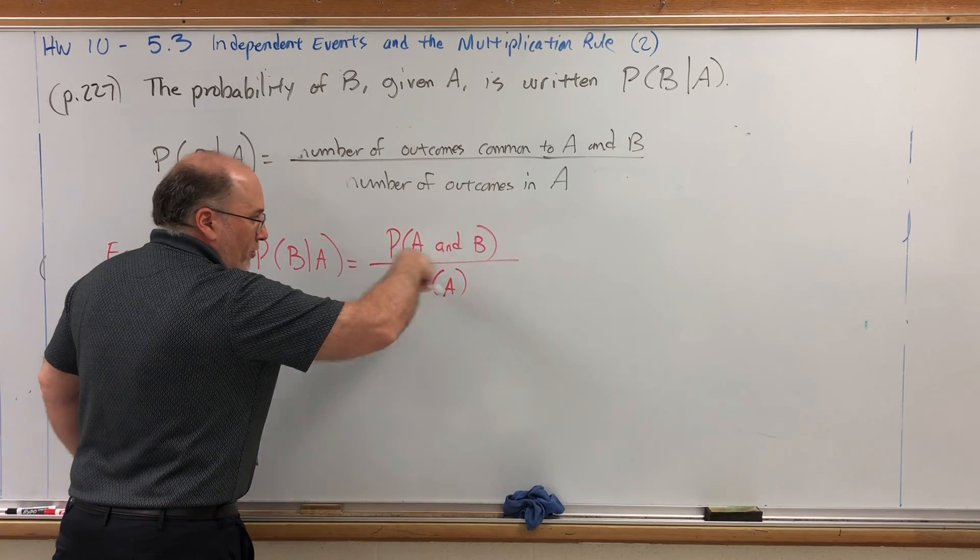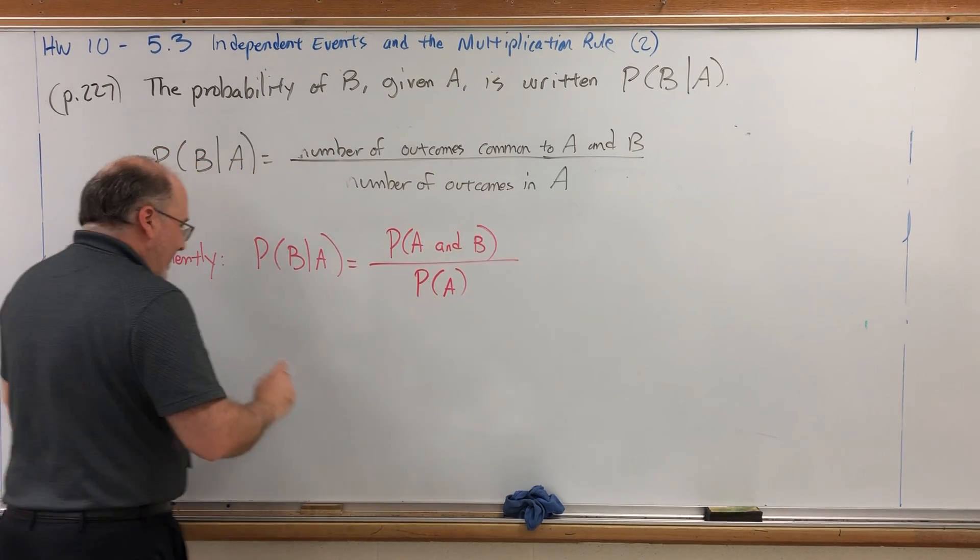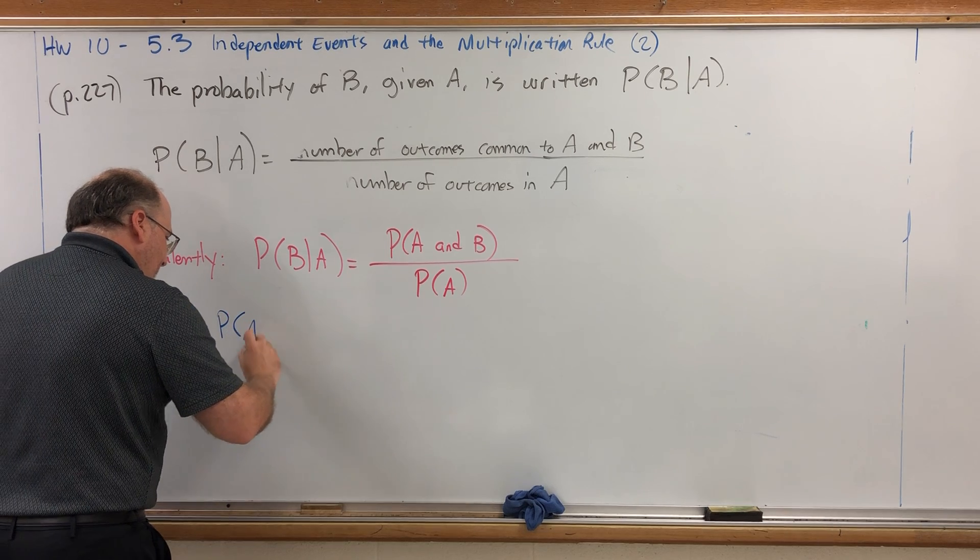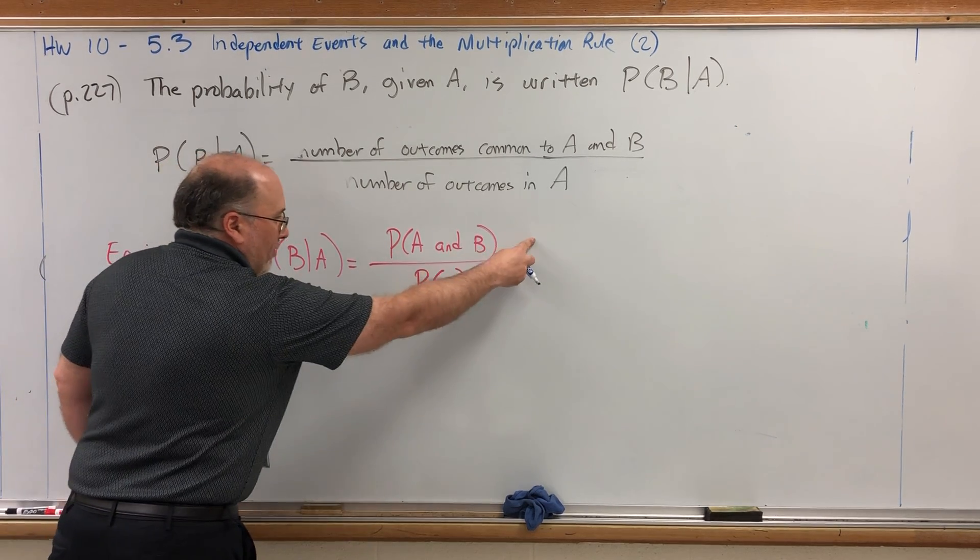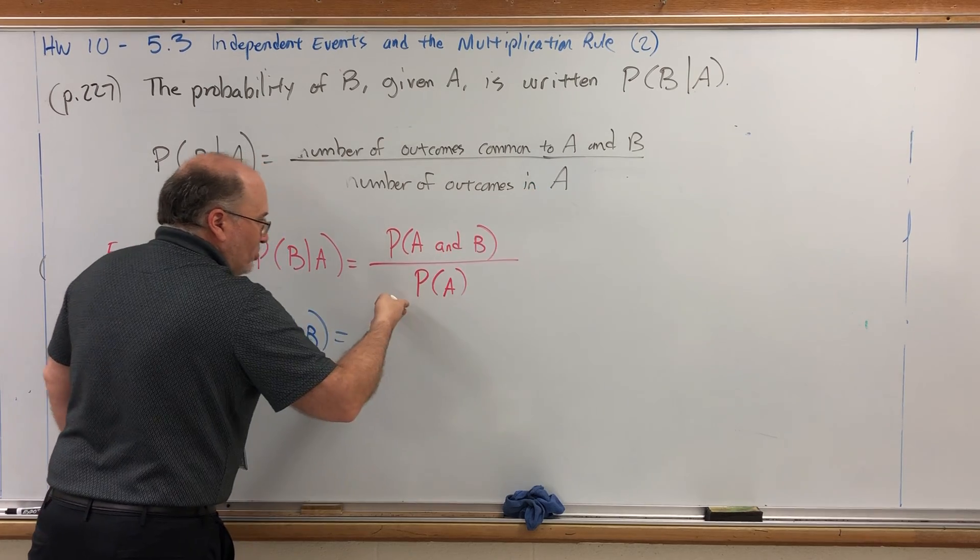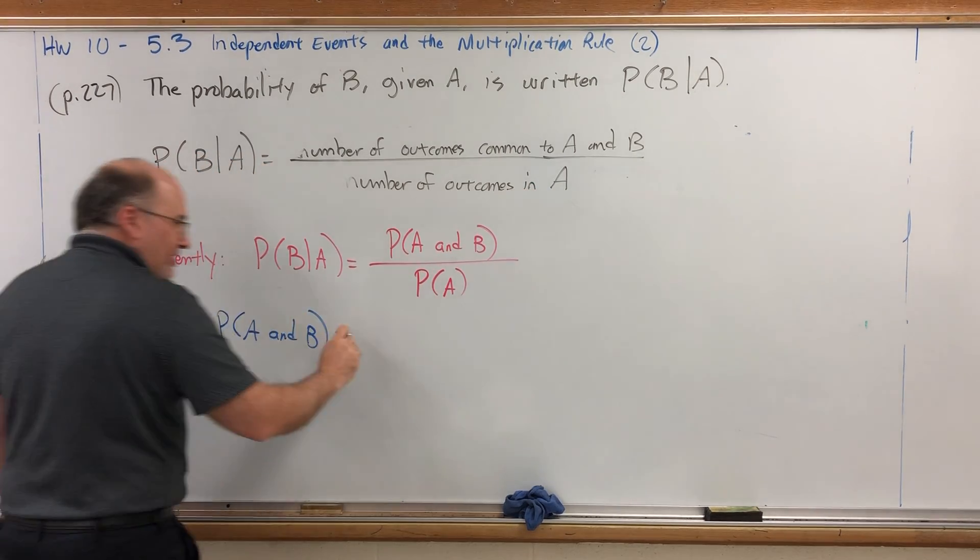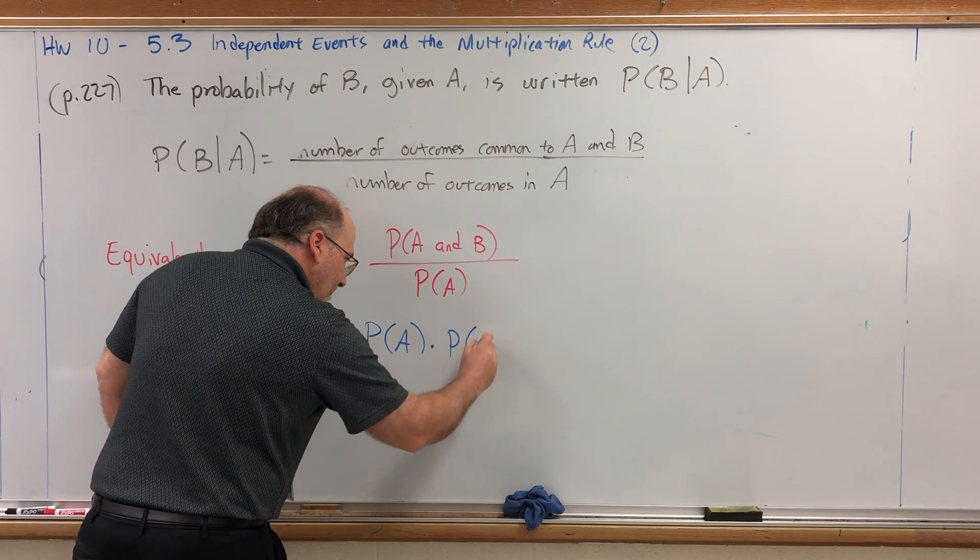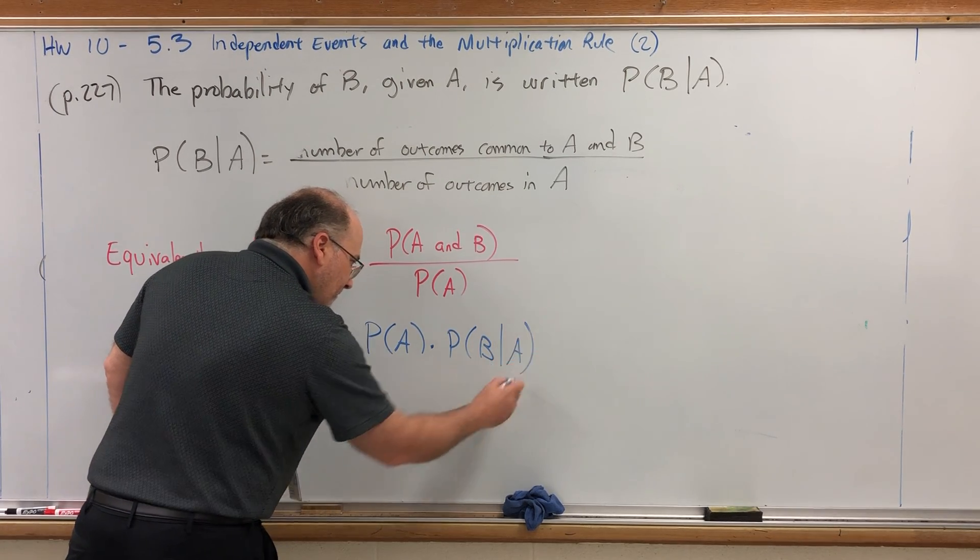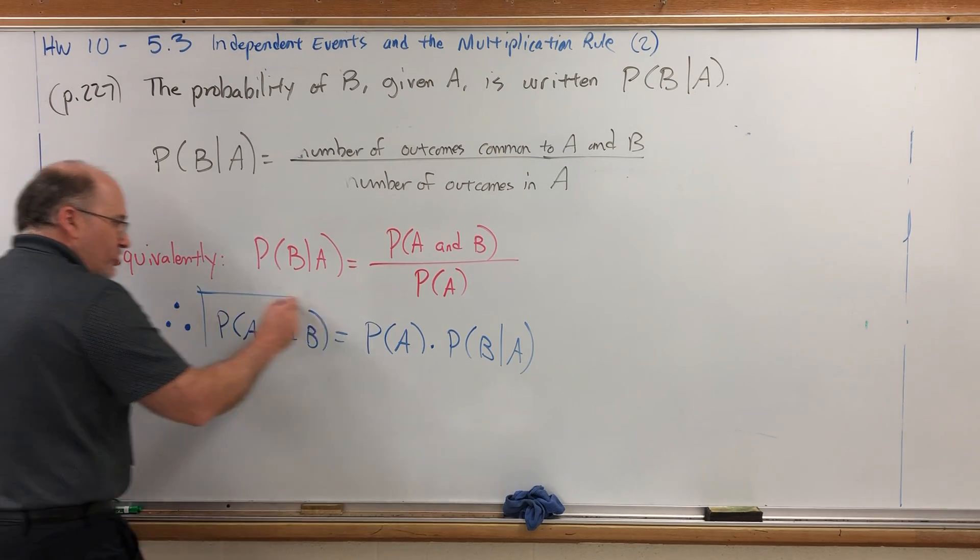Multiply by the probability of A here, A's cancel. Multiply by the probability of A here, and we get this. And this is our multiplication rule.